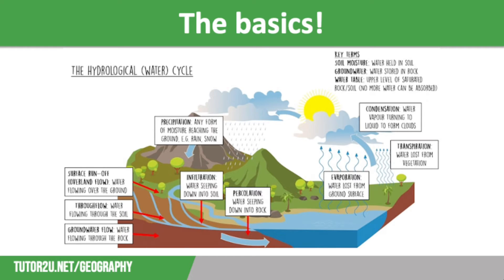Let's have a look at the diagram. We have evaporation, where water is lost from the ground surface, and transpiration, where water is lost from vegetation. Towards the top of the diagram, we have condensation, where water vapour turns into liquid to form clouds. This leads to precipitation, which is any form of moisture reaching the ground, such as rain or snow.